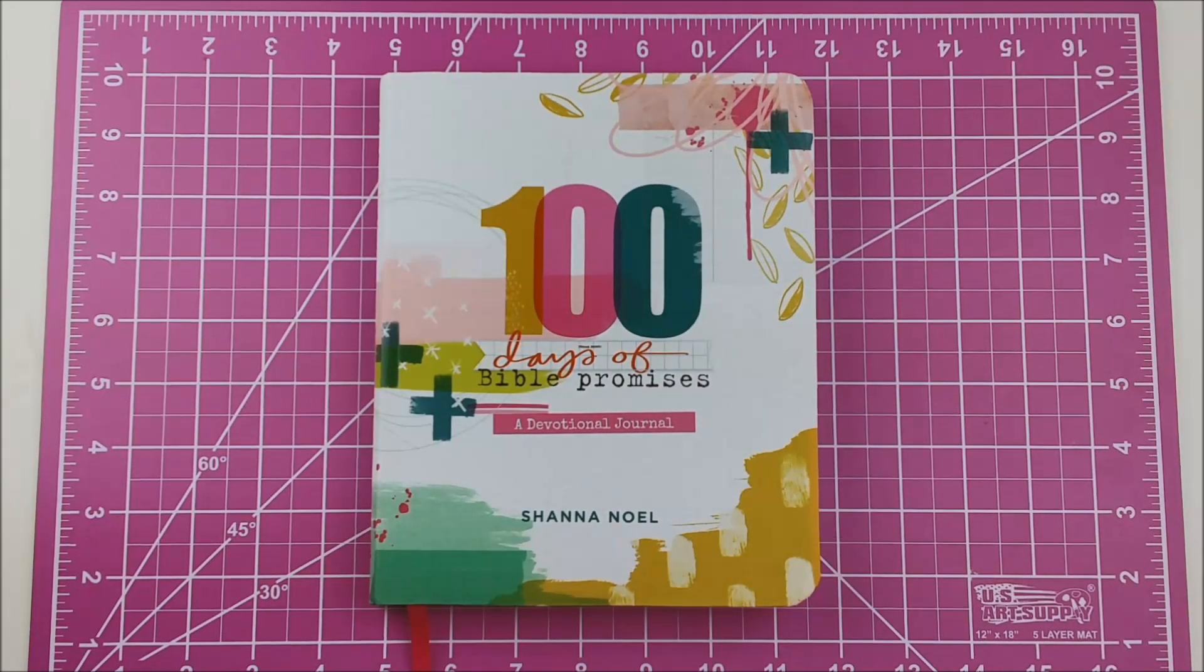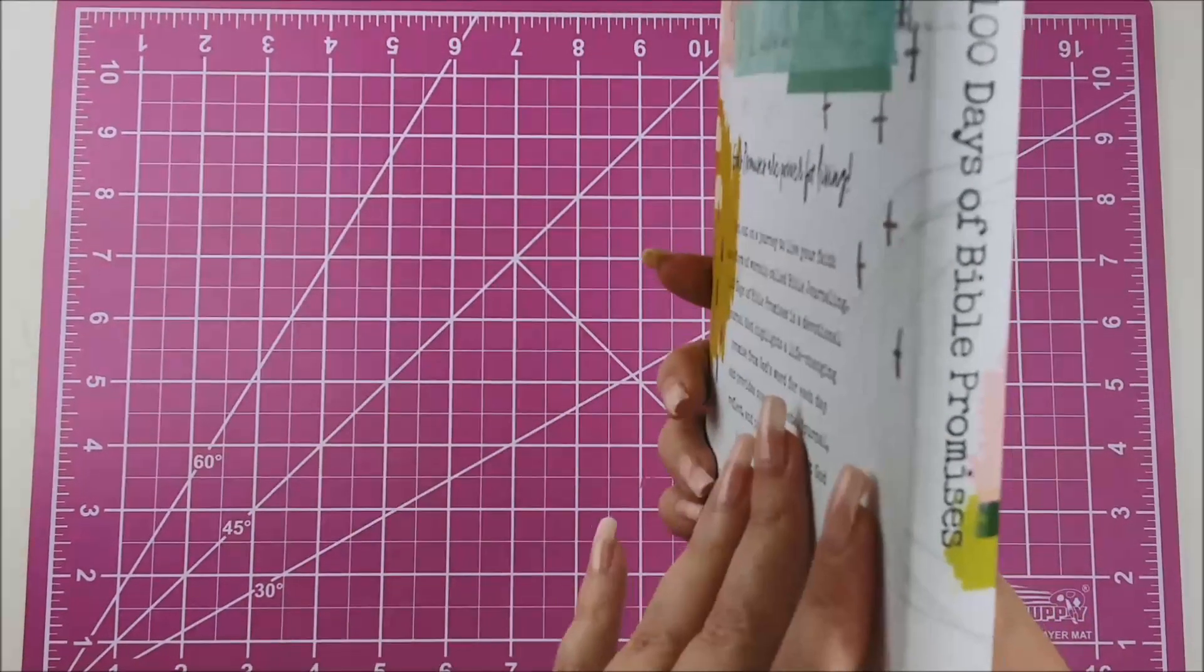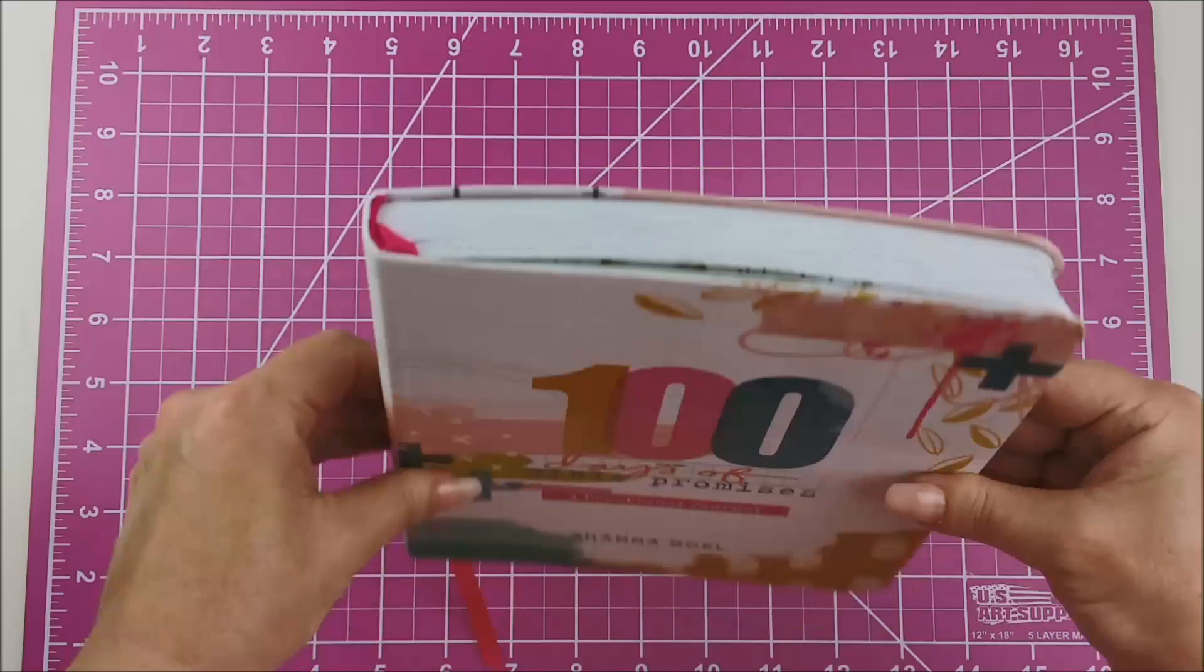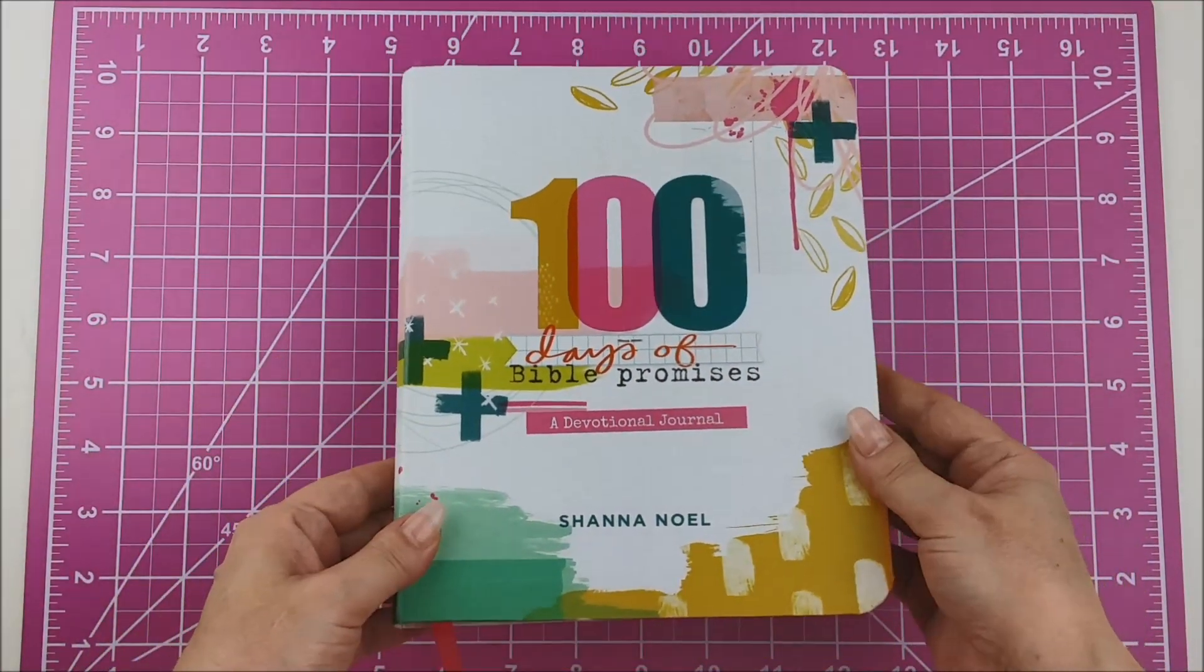Hey guys, it's Larry, and today I am going to do a quick tutorial on how I destroy a book, or better said, how I am going to unbind this book and punch holes in it and turn it into a disc-bound book.